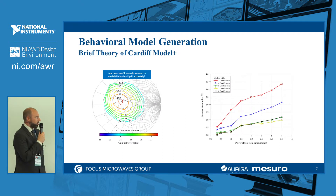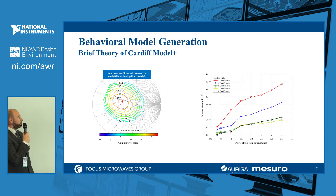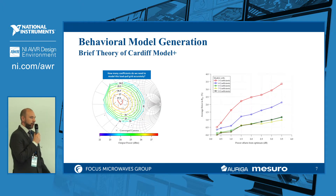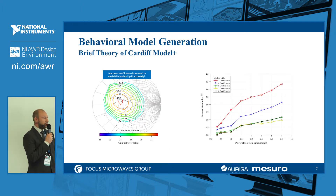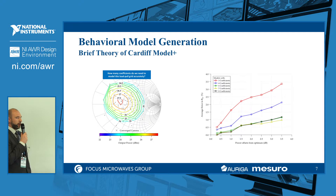On this slide, we can see how the number of coefficients — or the order of the function — affects model accuracy. Moving from 3 to 4, or 4 to 6 coefficients, significantly improves accuracy. However, moving from 6 to 7 or 8 coefficients yields no additional accuracy gain, because the sixth order is sufficient to fit the measured data.